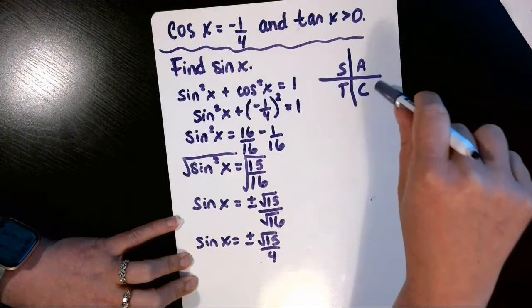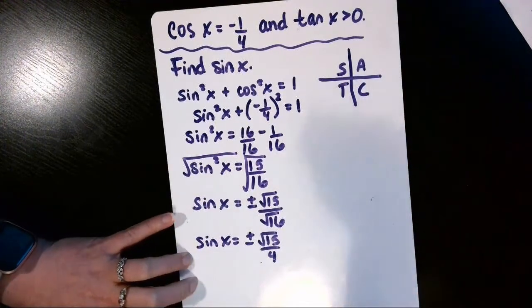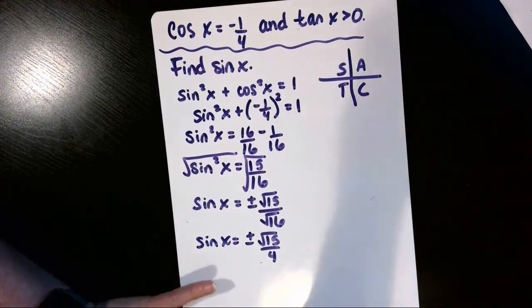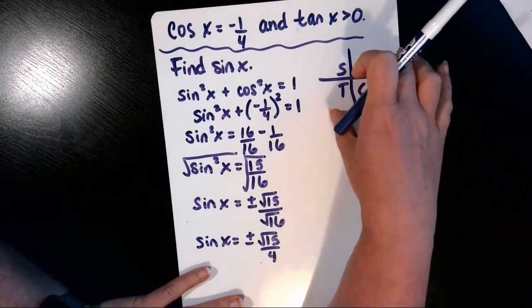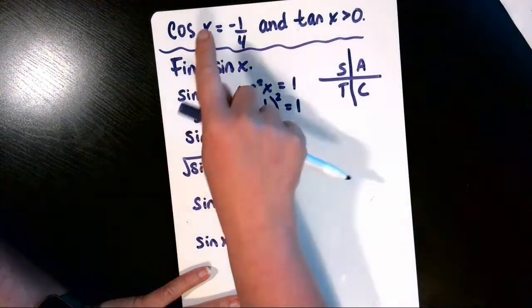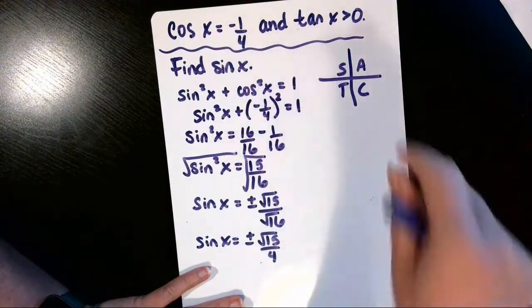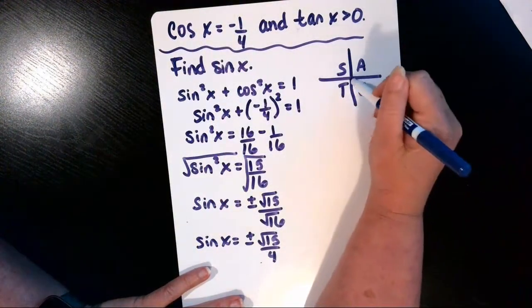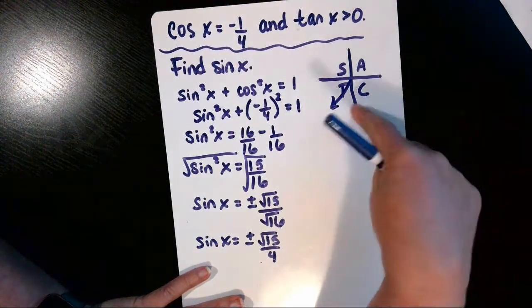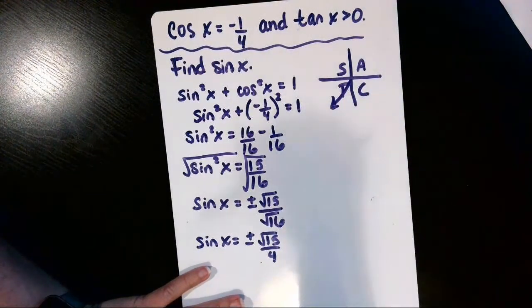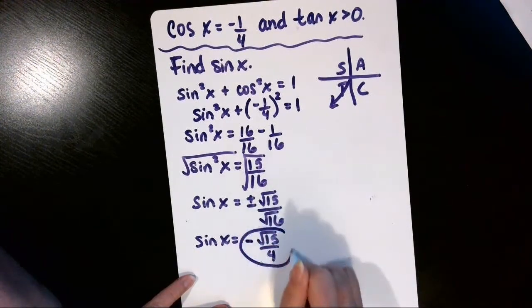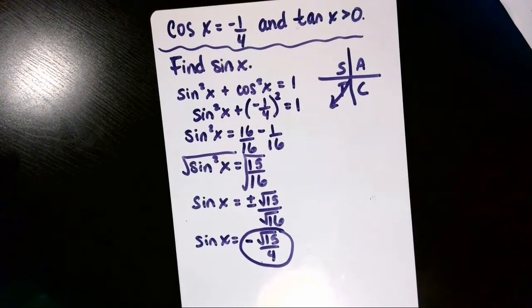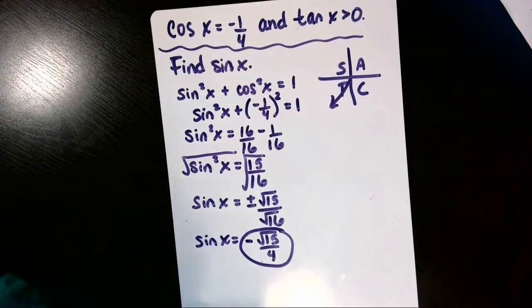In quadrant 4, cosine and its reciprocal secant are positive. So if we look back at this given information, we need the quadrant where the tangent is positive, that's 1 or 3, but also the cosine must be negative, which means this angle is in quadrant 3. And in quadrant 3, sine is also negative. So we're going to throw out the positive solution and keep the negative solution. And that means the sine of X is equal to negative square root of 15 over 4.